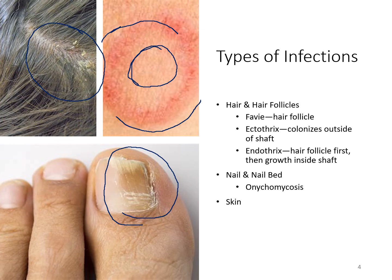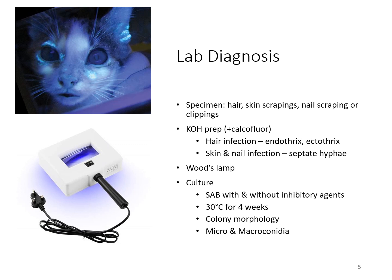The specimens submitted for diagnosis and workup include hair, skin scrapings, nail scrapings, and clippings. KOH can be used to look at the hair to see if there's any sort of infection inside the shaft or outside of the shaft. You can also use a Woods lamp, which uses UV light, and the organism itself will fluoresce in the presence of this light, but only certain organisms will do this. It's usually used more for looking for the source of the organism based on its ability to fluoresce, and that includes organisms that infect animals.